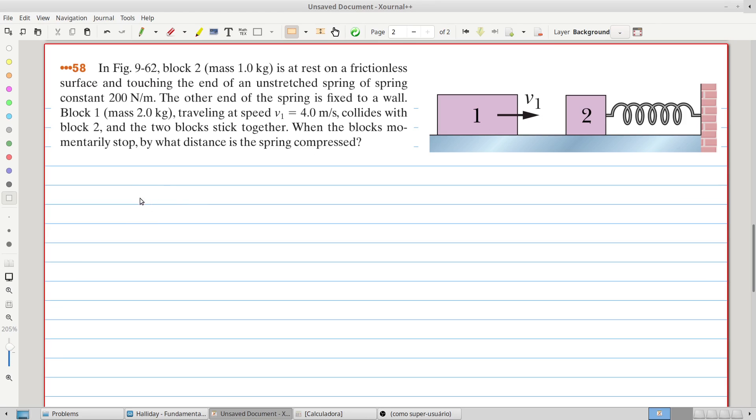So we can write that before the collision, we have the momentum M1 multiplied by V1, that is, the momentum of block 1, block 2 is at rest.